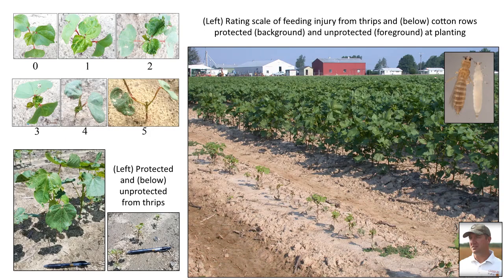We will first cover thrips. Thrips are the most consistent and predictable insect pests of upland cotton in South Carolina and much of the southeastern United States. These small insects feed on almost all portions of the cotton plant, but the most significant injury occurs on seedlings from plant emergence to about five true leaves. Excessive feeding injury can produce severely stunted plants, often resulting in loss of yield or at least a delay in crop maturity.